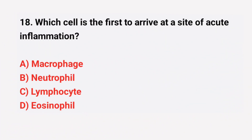Question number 18: Which cell is the first to arrive at a site of acute inflammation? The right answer is option B: Neutrophil.